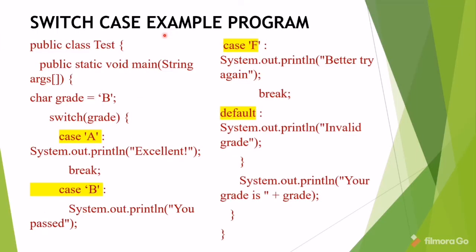Let's see one example program for switch case. We have taken one class called test. Inside that we have one variable char grade equal to b, and we are checking switch of grade. We have cases: case a, case b, case f, and default. Case a should print excellent, case b should print you passed, case f means better try again, and if none of the cases match it will print default, that is invalid grade. Here our grade is b, so switch of b comes to case b and prints you passed.